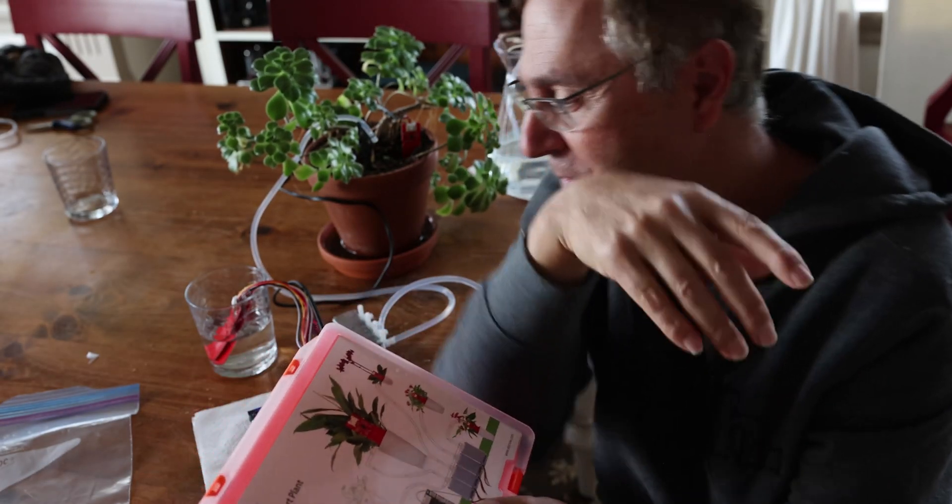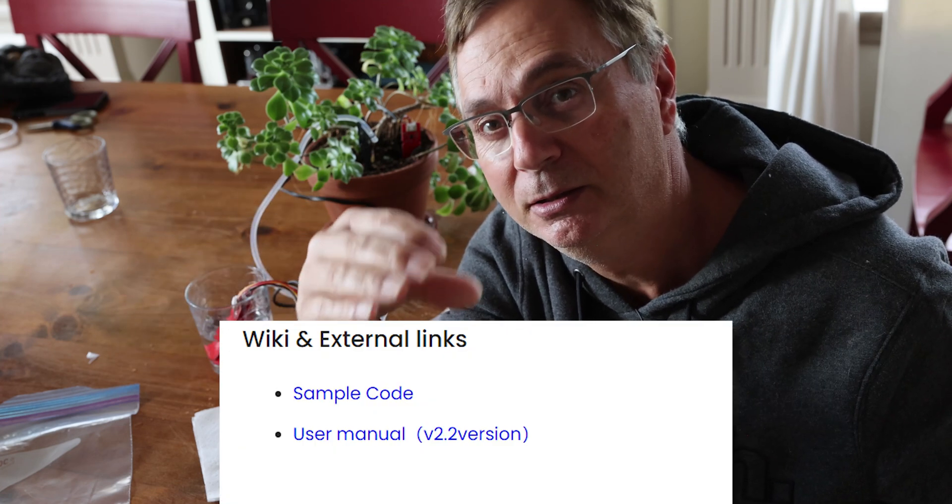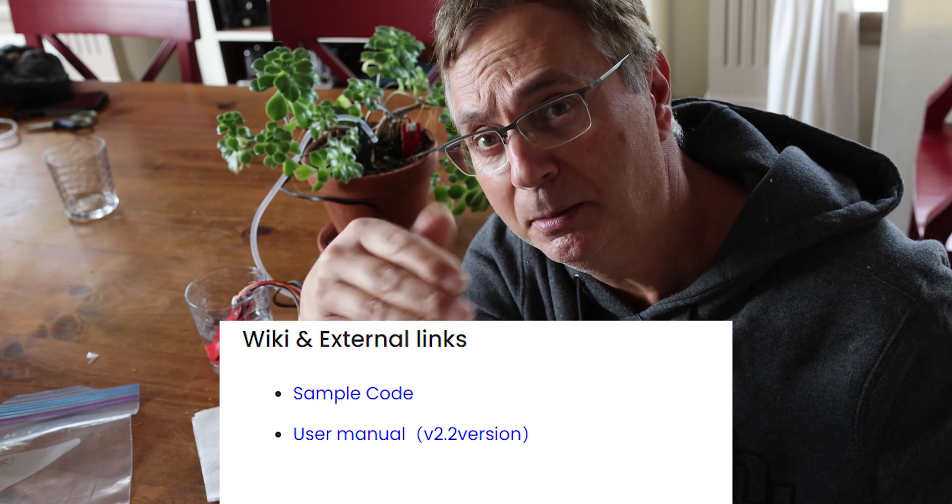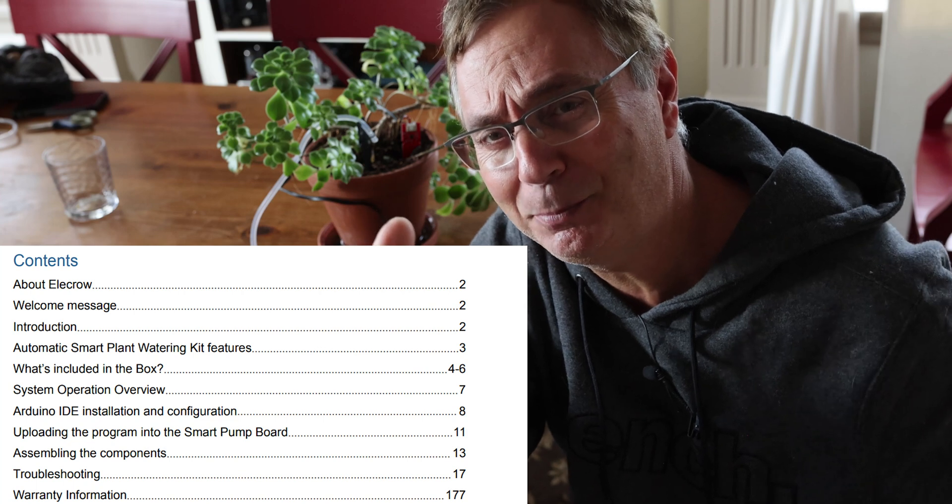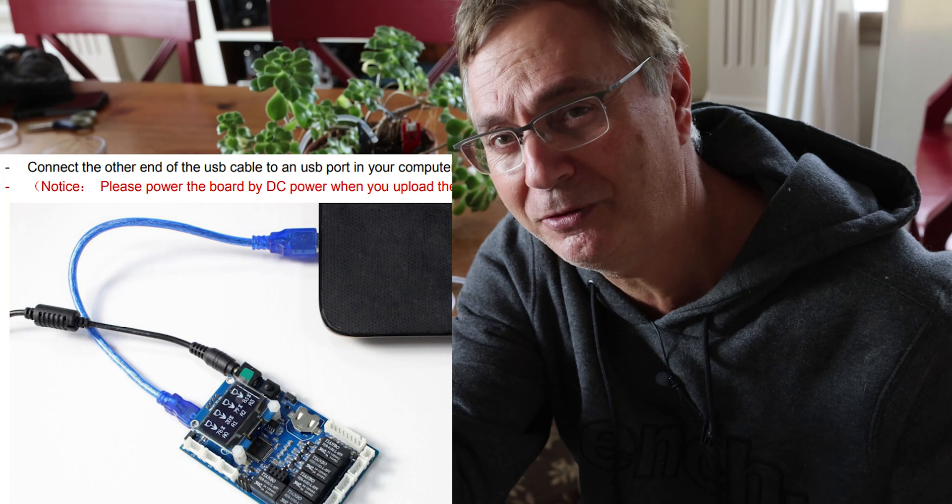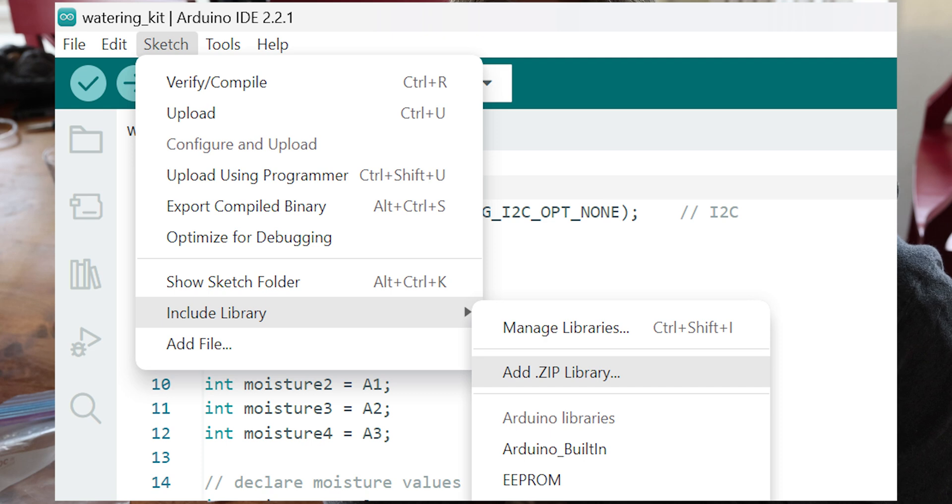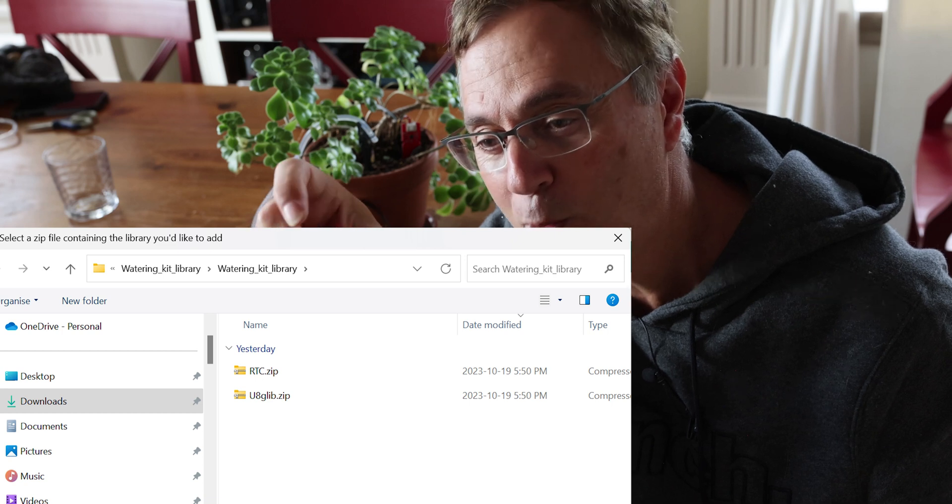When you get the box, the first thing you'll notice is there's no instruction in the box itself, but don't despair. On the Elecro website where you bought the product, there's a link to a manual. It's a very nicely done manual, actually. Probably one of the best I've seen for these kinds of products. One thing to be mindful of: when uploading the libraries to the Arduino, don't just upload the zip file. Go into the subfolders and upload those to the library.